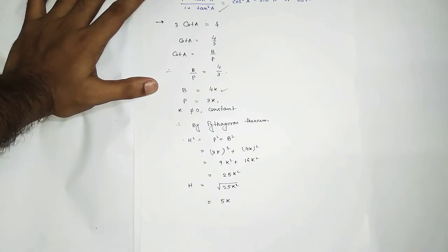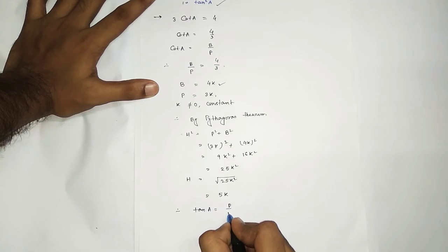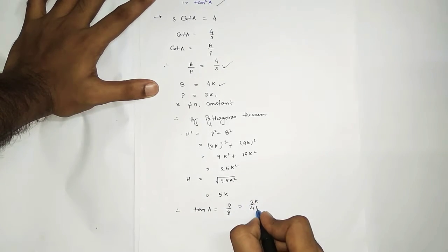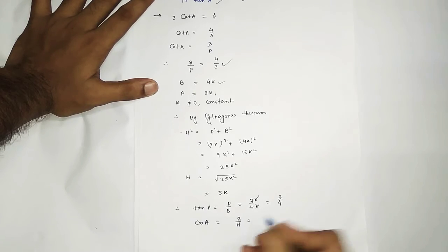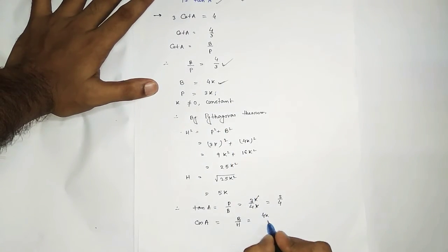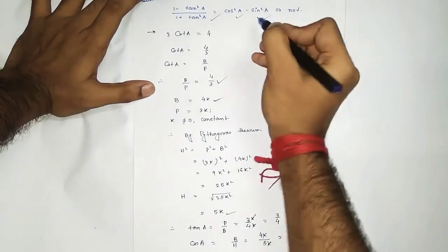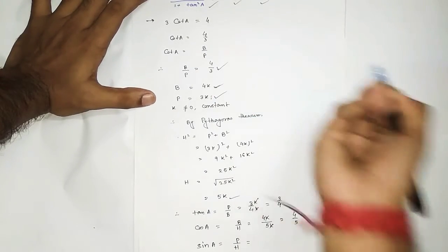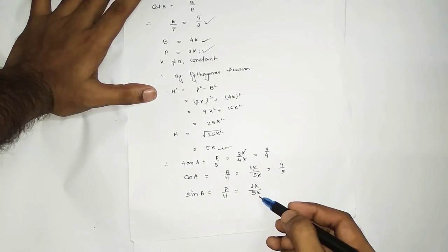Now we need the values of tan a, cos a, and sin a. Tan a means perpendicular by base — it is the reciprocal of cot a, so tan a equals 3 by 4. Cos a equals base by hypotenuse, which is 4k by 5k, so cos a equals 4 by 5. Sin a equals perpendicular by hypotenuse, which is 3k by 5k, so sin a equals 3 by 5.